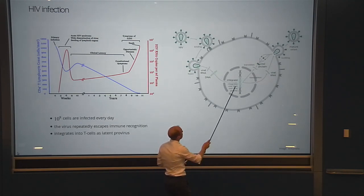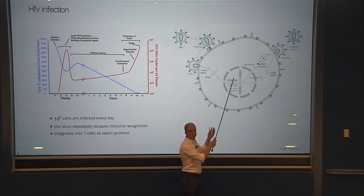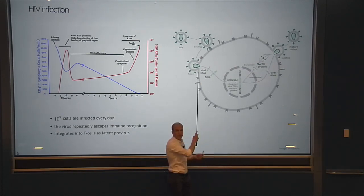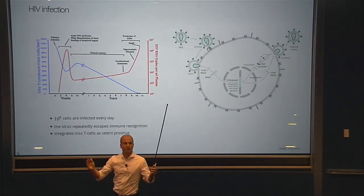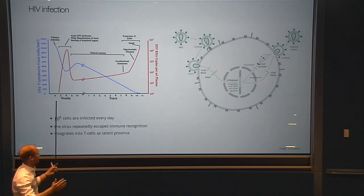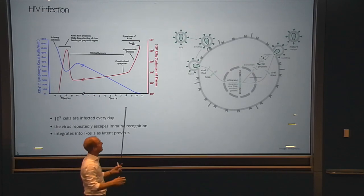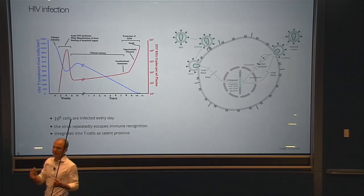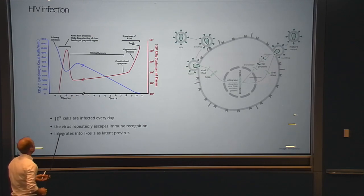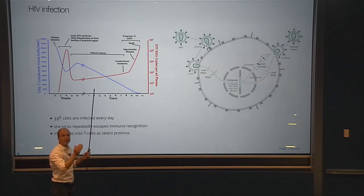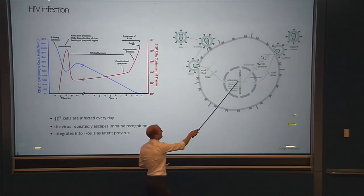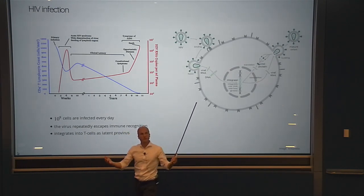There is one peculiarity of retroviruses: sometimes the process of producing new virus just stops after integration, so the cell carries a completely inert piece of viral DNA — this is called the latently infected cell. These latently infected cells are the reason why people, once they start treatment, have to keep taking those drugs forever. The moment they stop, one of these many latently-integrated cells wakes up and seeds the infection back to normal levels.